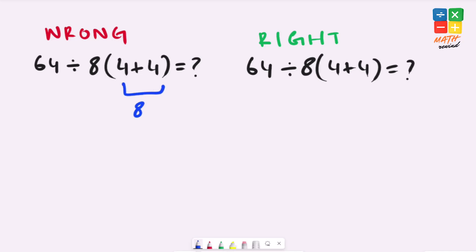4 plus 4 gives us 8. 8 times 8 equals 64 and 64 divided by 64 equals 1.